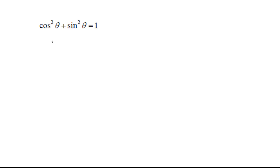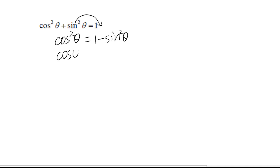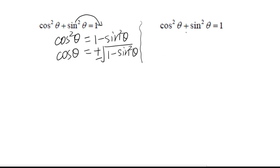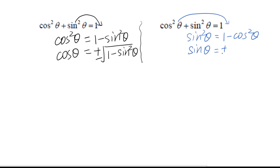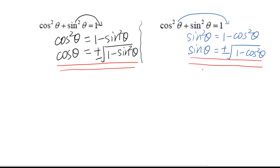First, subtract sine squared theta from both sides. You get cosine squared theta equals 1 minus sine squared theta. Then take the square root of both sides. You get cosine theta equals plus or minus square root of (1 minus sine squared theta). Similarly, sine theta equals plus or minus square root of (1 minus cosine squared theta). These two trig identities are very important — please remember them.